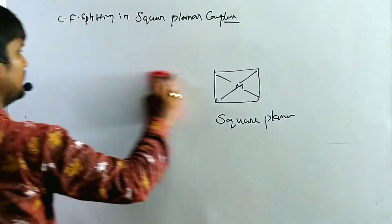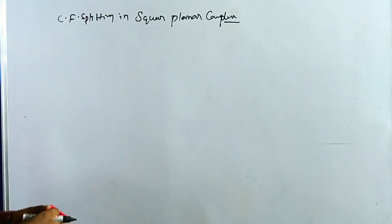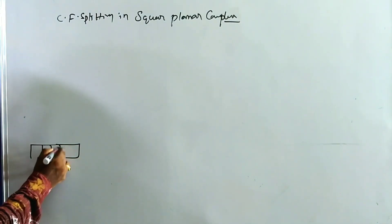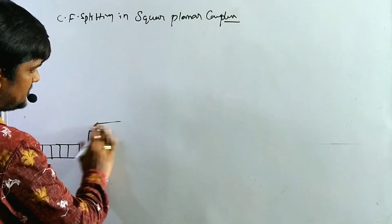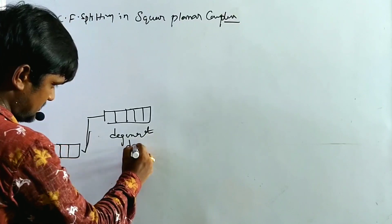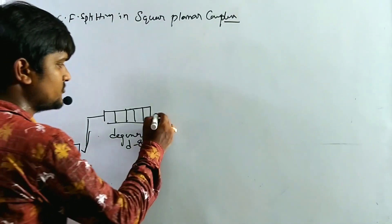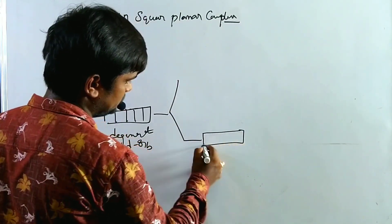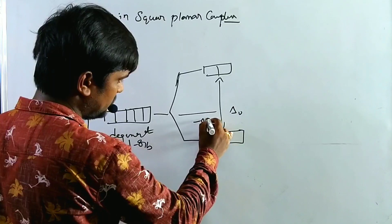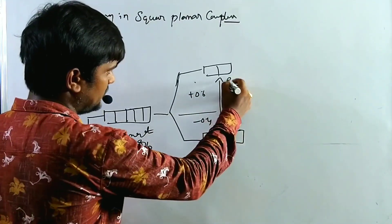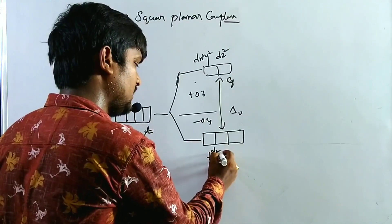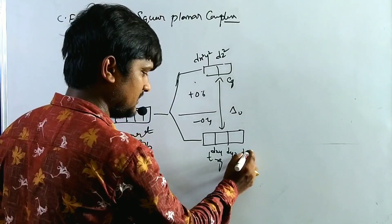The square planar complex is derived from the octahedral arrangement. So the d orbitals first split in the octahedral manner, then undergo a further split. The degenerate d orbitals split into T2g and Eg sets in octahedral symmetry, with energy difference delta O. The Eg set contains dx²−y² and dz², while the T2g set contains dxy, dyz, and dzx.